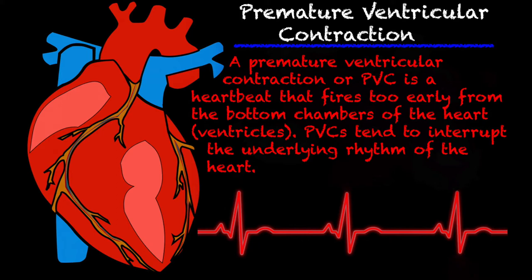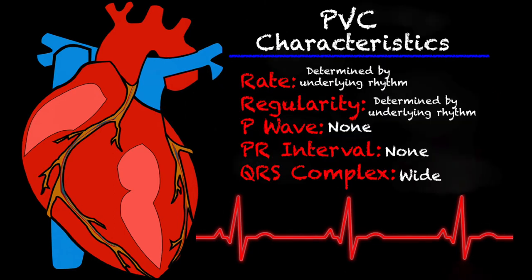PVCs do tend to interrupt the underlying rhythm of the heart. Let's go over some of the characteristics of a PVC, very similarly to how we go over the characteristics of different rhythms. Your rate is completely determined by the underlying rhythm, and the regularity is the same way. Your PR interval is not going to be present, your P wave is not going to be present, and your QRS complex — because this is a beat coming from the ventricles — is going to be very wide.